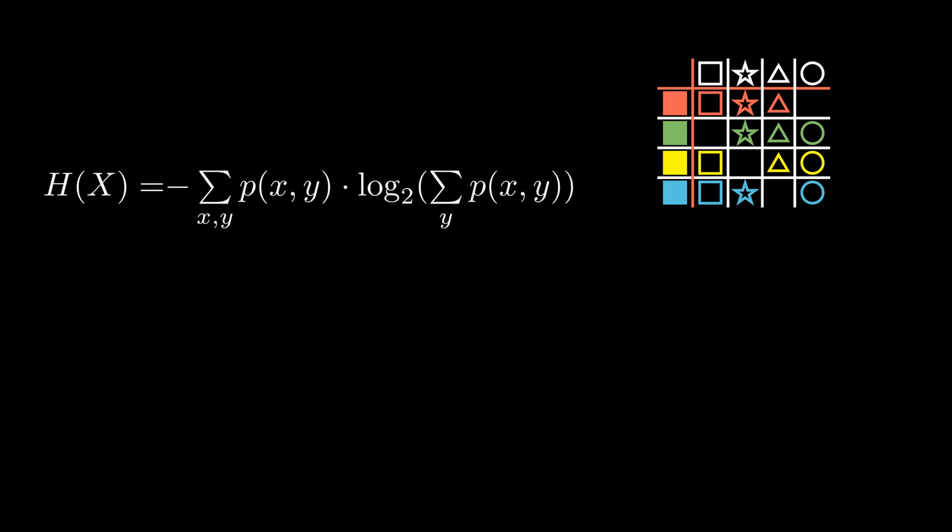It might look complex at first, but let's write it out and see what we come to. We take the probability of a single event. Let's say it's picking a red square. And now we multiply it by the logarithm of the sum of all probabilities of picking a red shape.